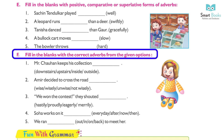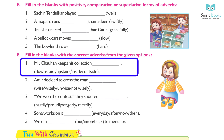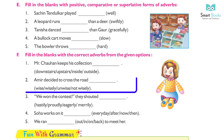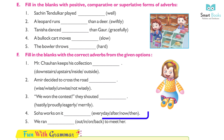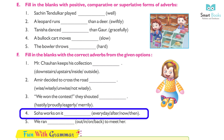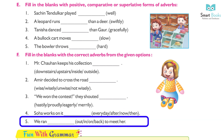Fill in the blanks with the correct adverb from the given options. 21. Mr. Tohan keeps his collection inside. 22. Aamir decided to cross the road wisely. 23. We won the contest — they shouted proudly. 24. Soha works on it every day. 25. We ran out to meet her.